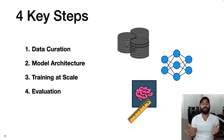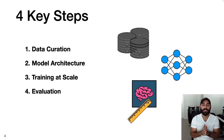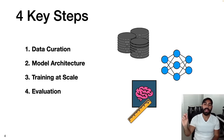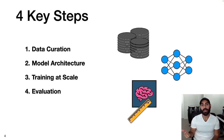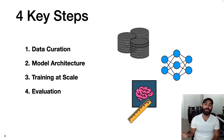So now that you've realized you probably won't be training a large language model anytime soon — or maybe you are — let's dive into the technical aspects of building one of these models. I'm going to break the process down into four steps: one is data curation, two is the model architecture, three is training the model at scale, and four is evaluating the model.